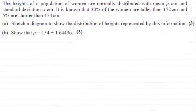Hi there. Now for this question we're told that the heights of a population of women are normally distributed with a mean mu centimeters and standard deviation sigma centimeters. And it is known that 30% of the women are taller than 172 centimeters and 5% are shorter than 154 centimeters.